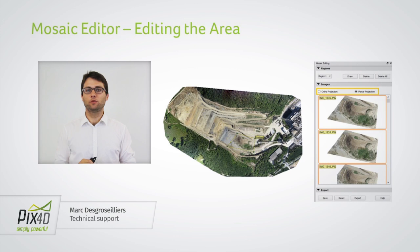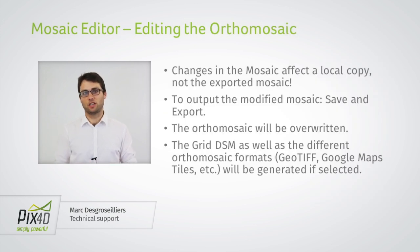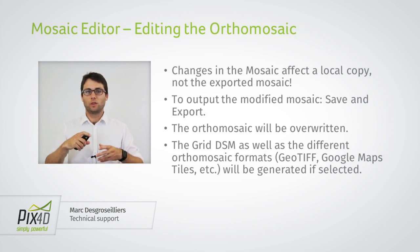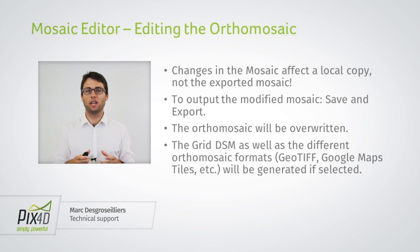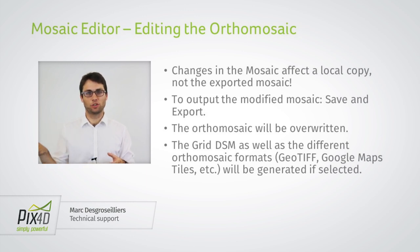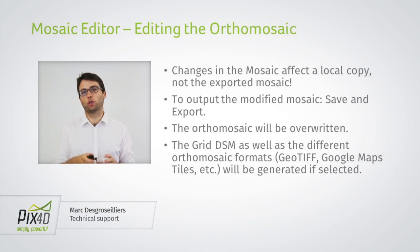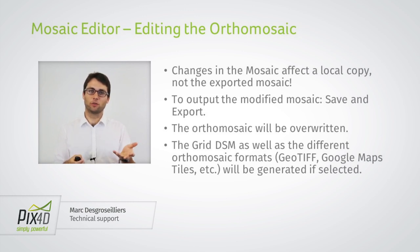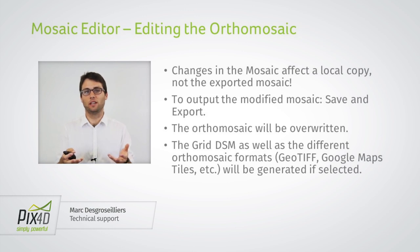Let's move on to a point which is a little tricky with the orthomosaic: saving the orthomosaic. There's both an internal copy and the exported GeoTIFF that you can use in third-party software. If you draw a few regions and want to save the changes in Pix4D Mapper, you click Save — and this will overwrite the internal copy of the orthomosaic, but it will not change the exported GeoTIFF. If you want these changes reflected in the exported GeoTIFF, you need to click Export. So Save affects the internal working copy inside the software, and Export re-exports and modifies the GeoTIFF.